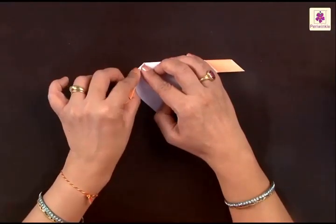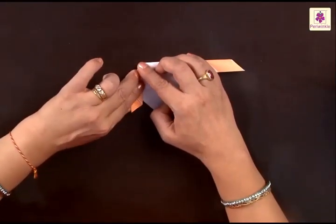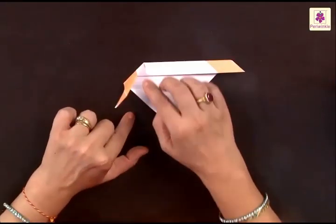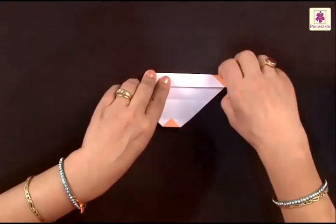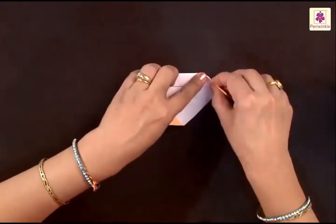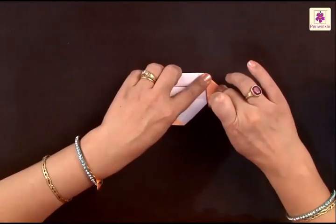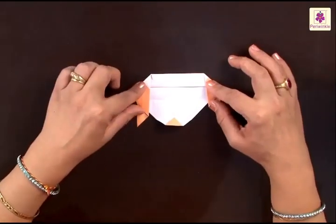Now for the ears, fold the left side inwards in a way that the tip points downwards. In the same way you have to fold the right one to make another ear. Now the ears are ready.